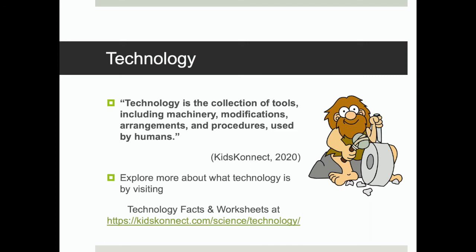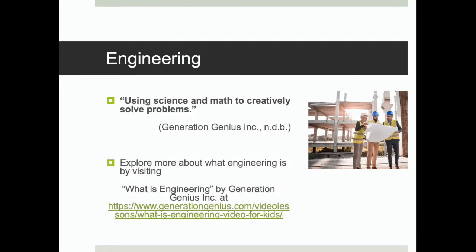Explore more about what technology is by visiting "Technology Facts and Worksheets" by Kids Connect. Engineering. According to Generation Genius Inc., engineering means using science and math to creatively solve problems. According to Kelly and Knowles, engineering design provides students with a systematic approach to solving problems that often occur naturally in all of the STEM fields. Engineering and technology provide a context in which students can test their own developing scientific knowledge and apply it to practical problems, enhancing their understanding of science and their interest in it, as they recognize the interplay among science, engineering, and technology.